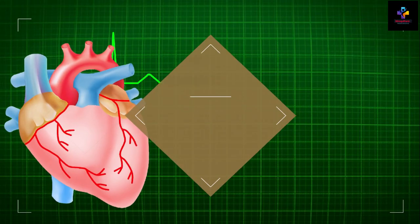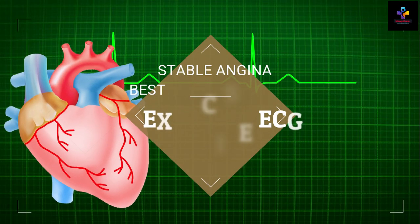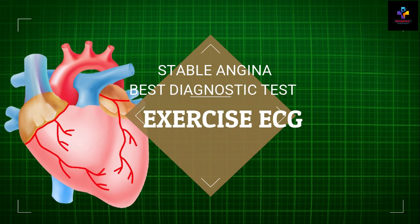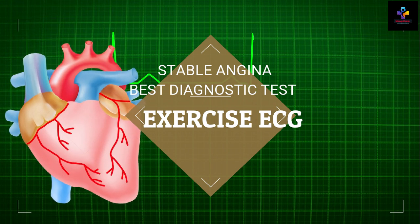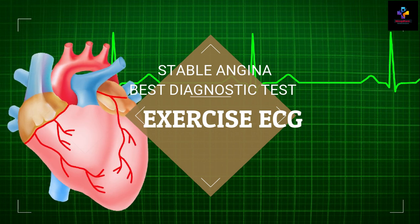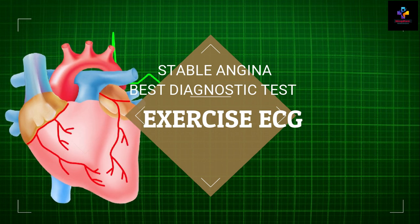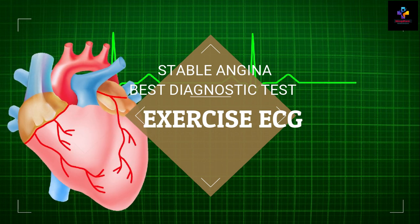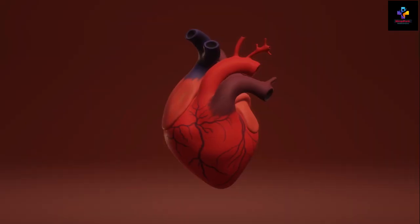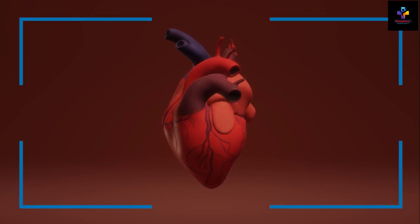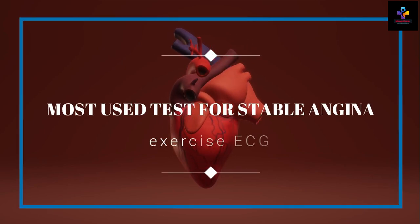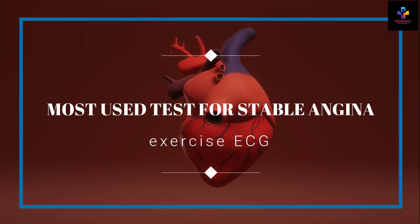The next question was related to angina. The question was: most widely used test for diagnosis of stable angina is? There are two types of angina: one is stable angina and the other is unstable angina. The options given were coronary arteriography, exercise ECG, 12-lead ECG at rest, and chest x-ray. For the diagnosis of stable angina, the most appropriate and most widely used test is the exercise ECG.